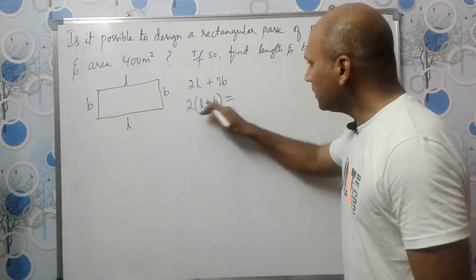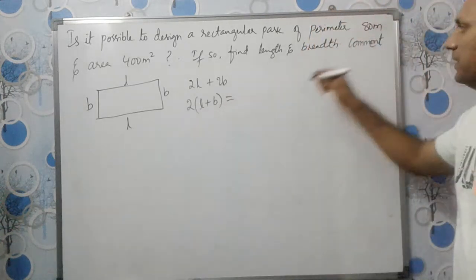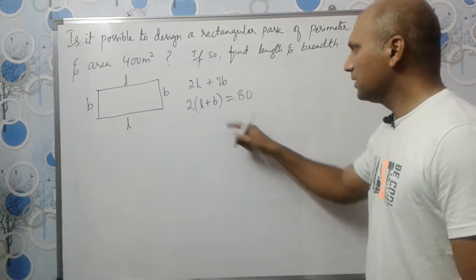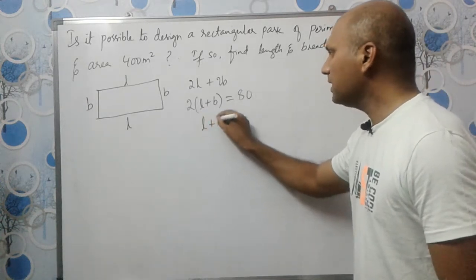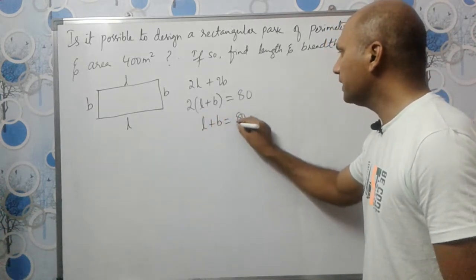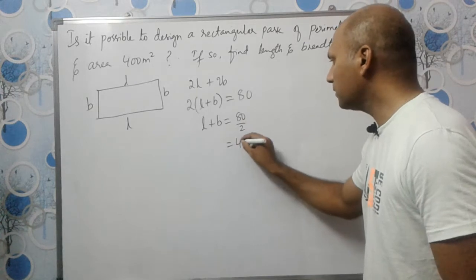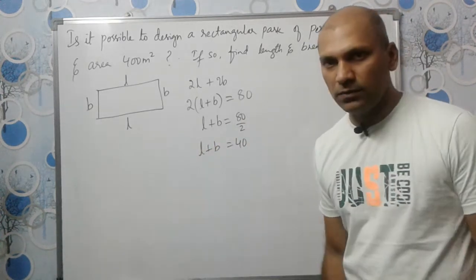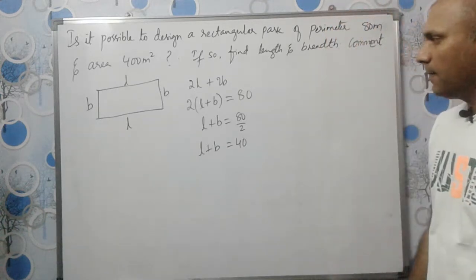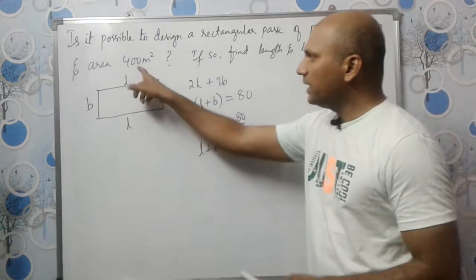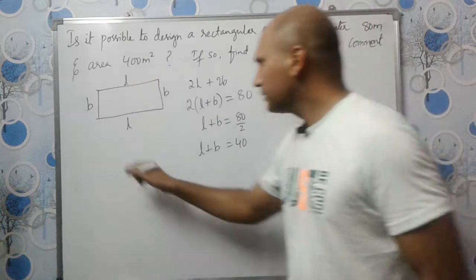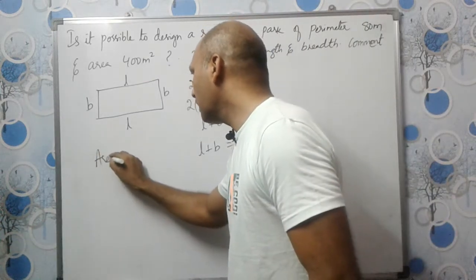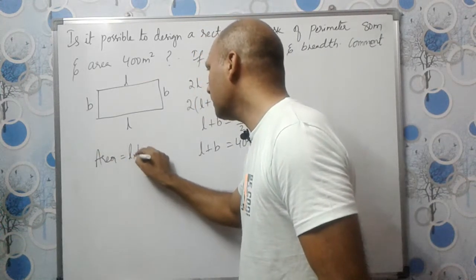The perimeter is given as 80 meters. If you send 2 on the other side, L+B will be equal to 80 divided by 2, which equals 40. So L+B equals 40.